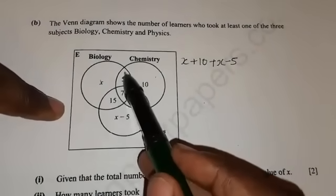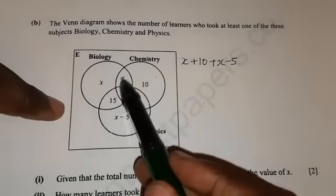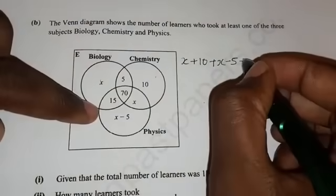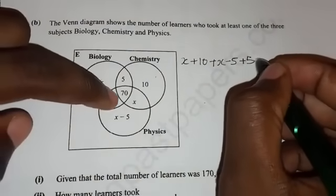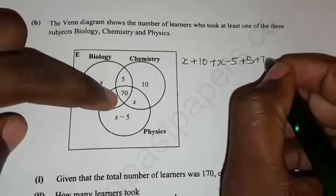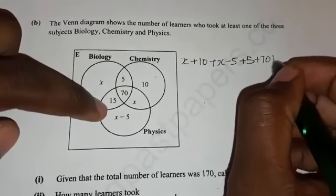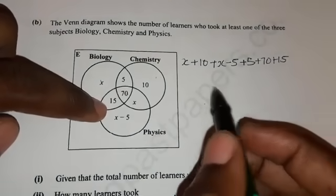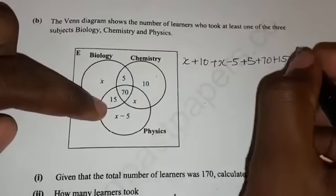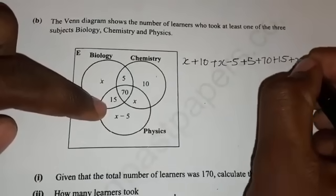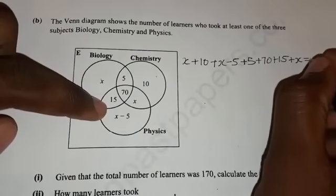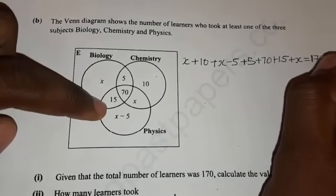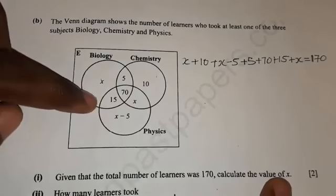So we are done with these. Now we can add these that are in this intersection. So we have plus 5 plus 70 plus 15. We are remaining with this plus x. This should equal to 170.